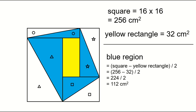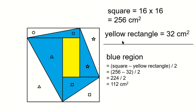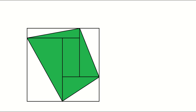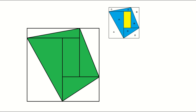Now, we know the area of the square and the area of the yellow rectangle. So, the area of the blue region is: square minus yellow rectangle, divided by 2. Equals 256 minus 32, divided by 2. Equals 224 divided by 2. Equals 112 square centimeters. The area of the blue region is 112 square centimeters.